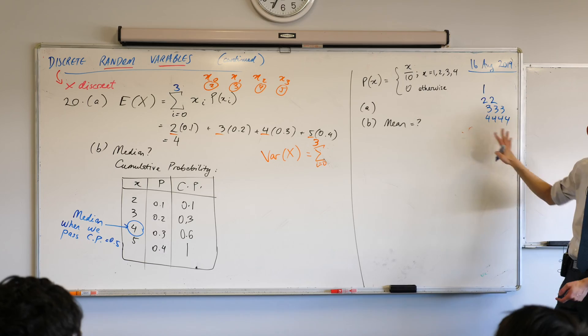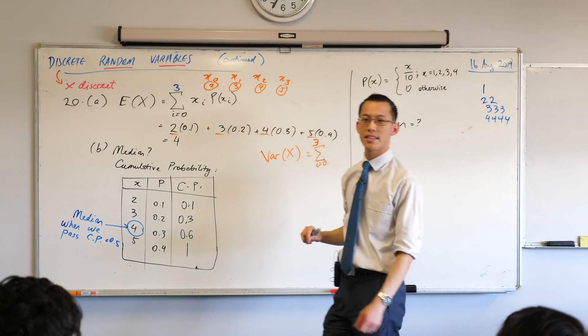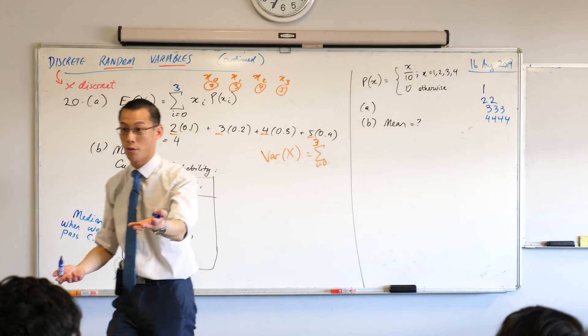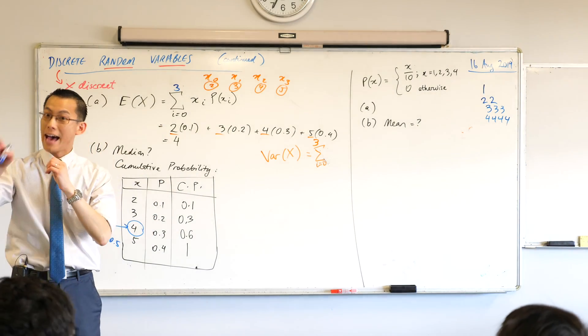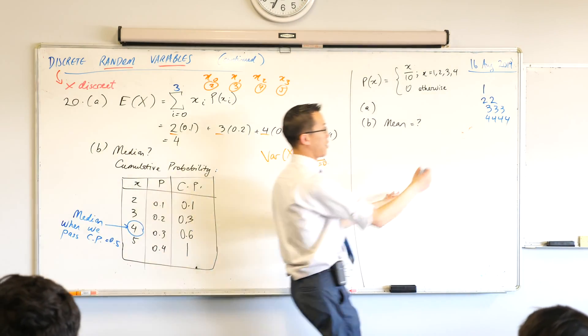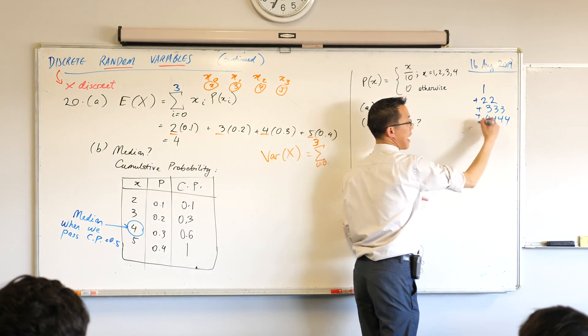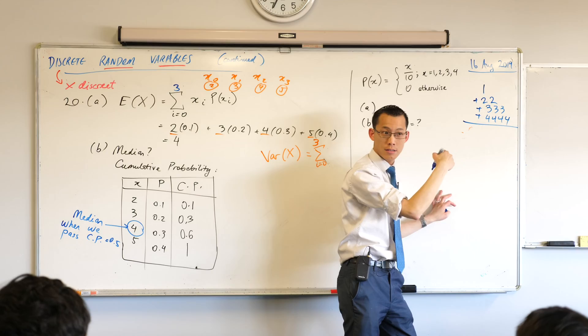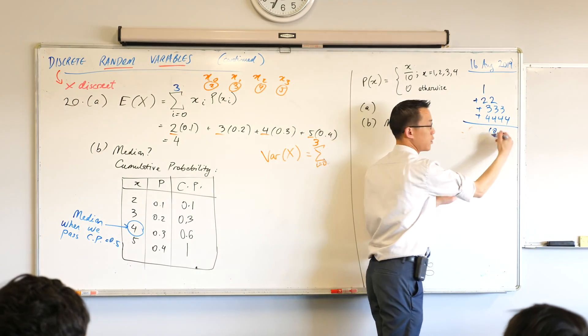So, here's our ten people, right? How would I calculate the mean of that group? You told me before. What am I going to do? Add them all up. Add them all up. So, I'm going to go add, add, add, etc. And then I'm going to divide by, in this case, the amount of people, which is ten.